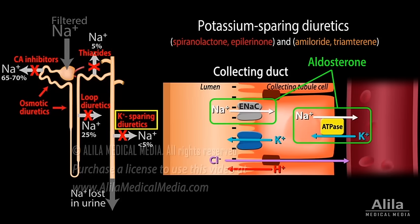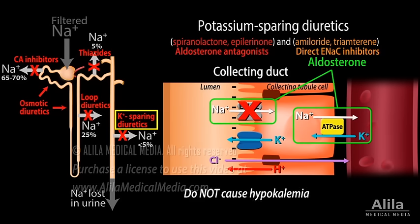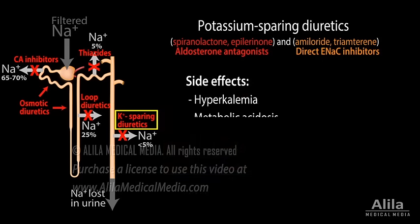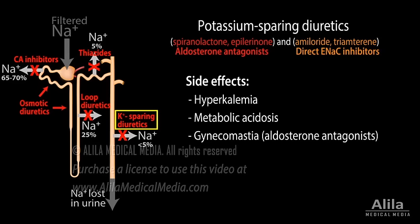Potassium-sparing diuretics include aldosterone receptor antagonists and direct ENaC inhibitors. They are called potassium-sparing because they do not increase potassium loss, unlike all other diuretics acting upstream. Instead, they reduce potassium loss because reduced sodium reabsorption decreases the electrogenic exchange for potassium. Aldosterone antagonists also directly inhibit the sodium-potassium pump, reducing potassium loss. Because the collecting duct reabsorbs only a small amount of sodium, this class of drugs has only a mild diuretic effect. They are commonly used in conjunction with thiazide or loop diuretics to prevent hypokalemia. Side effects include hyperkalemia, metabolic acidosis, and effects associated with inhibition of aldosterone.